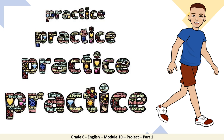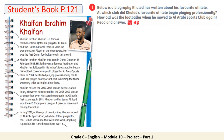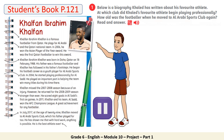Now, let's practice and check our understanding. Let's move to the students' book, page 121, exercise number 1. As you can see from the picture and the title, this is about Khalfan Ibrahim Khalfan. Below is a biography Khaled has written about his favorite athlete. Let's read together and find out at which club did Khalfan begin playing professionally, and how old was the footballer when he moved to Al Arabi sports club again. Please pause the video, read thoroughly, and then find the answer.